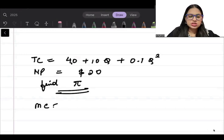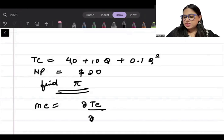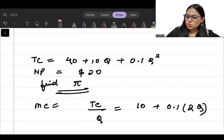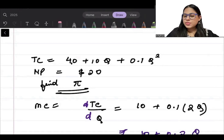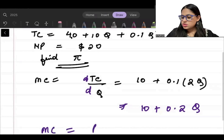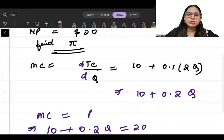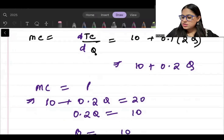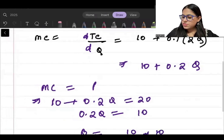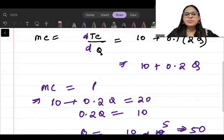What you will be doing? Just equate MR to MC. What will be your marginal cost? Just differentiate this function with respect to quantity. dTC/dQ - this is going to be 10 plus 0.2Q. I will equate MC to P. So 10 plus 0.2Q equals 20. 0.2Q equals 10, and Q will be 10 divided by 0.2, which is going to give me the answer as 50. This will give me the quantity as 50.